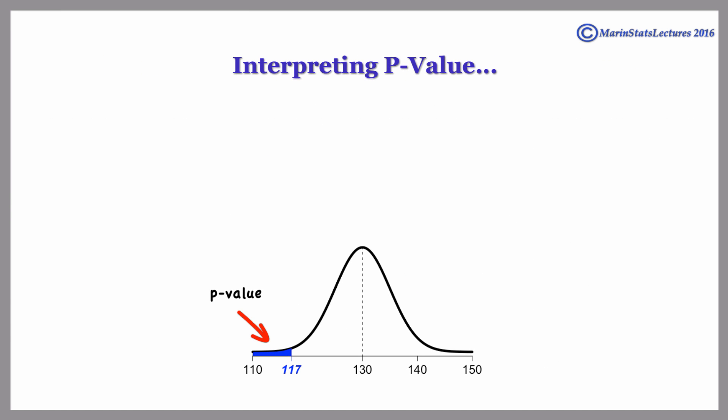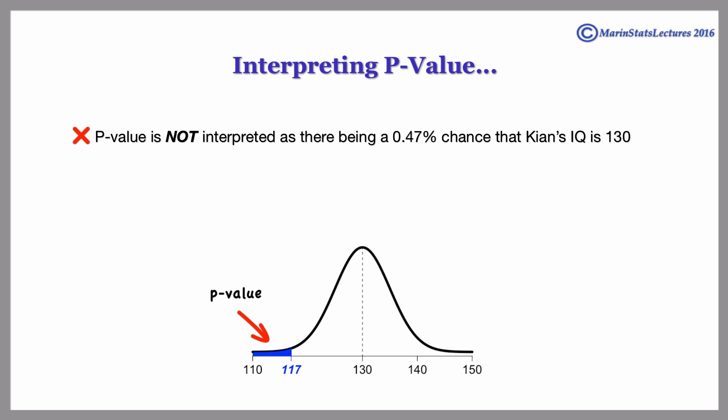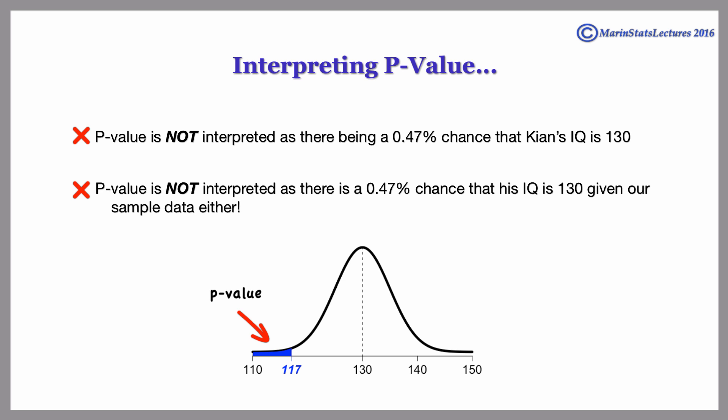It is very important that we talk about what the p-value's interpretation is and what it is not. The p-value is not interpreted as there being a 0.47% chance that Kian's IQ is 130, nor as there being a 0.47% chance that his IQ is 130 given our sample.